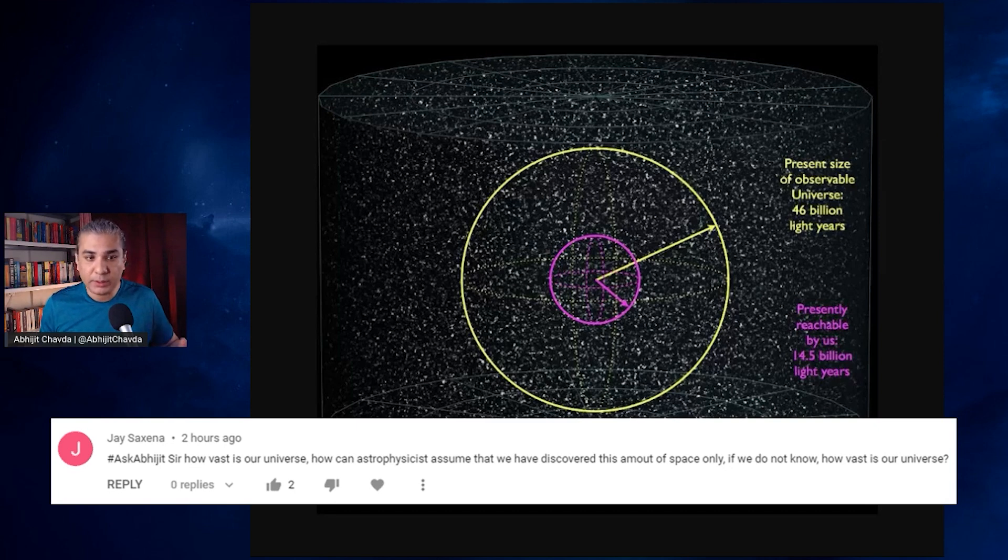We know that the cosmic horizon, the observable horizon, the size of the observable universe, is about 46 billion light years in diameter. It's a sphere of radius 46 billion light years.